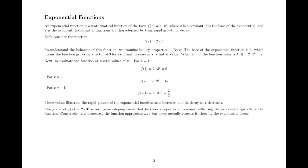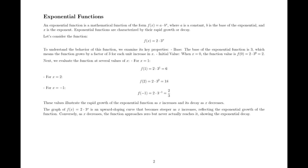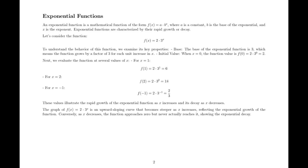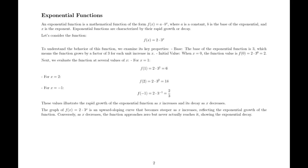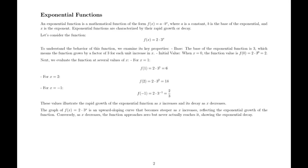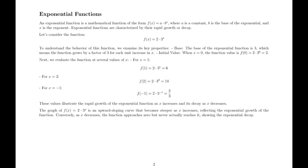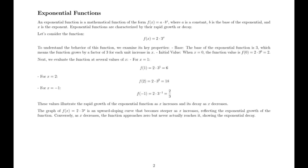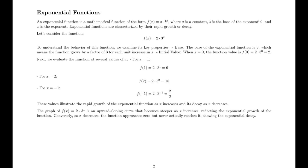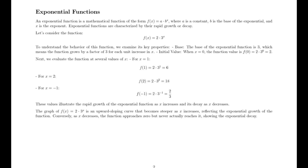Next, we evaluate the function at several values of x. For x = 1, f(1) = 2 · 3¹, which is 6. For x = 2, f(2) = 2 · 3², which is 18. For x = -1, f(-1) = 2 · 3⁻¹, which is 2/3.